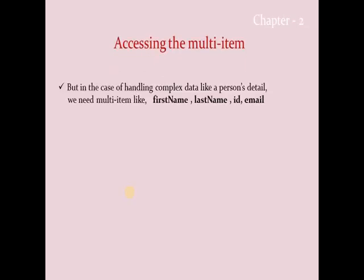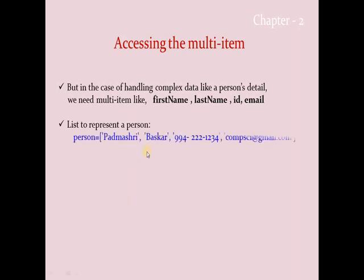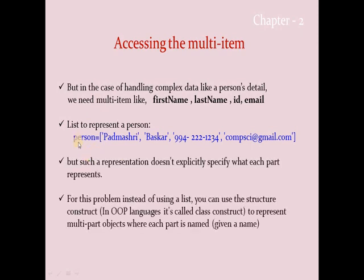A list is a collection of different data types. But imagine handling complex data like a person's details — first name, last name, ID, email address, contact number. If I want to handle this data using a list, I create a list named `person` with values like first name, last name, ID, and email address. I can represent details in a list like this, but there is a practical problem.